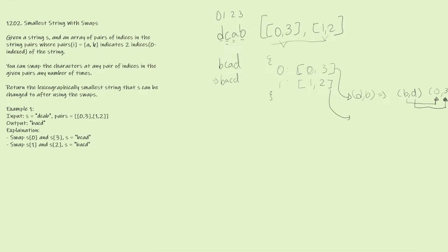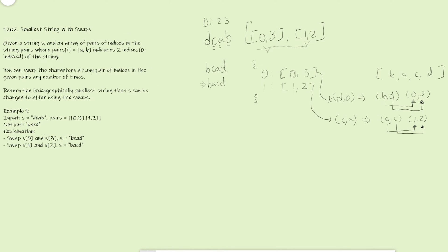Similarly, for indices 1 and 2 we grab c and a from the original string, sort them to get 'ac', and then a goes into index 1 and c goes into index 2. Building the final result array — b at index 0, a at index 1, c at index 2, d at index 3 — gives us the smallest possible string.